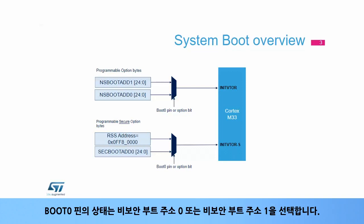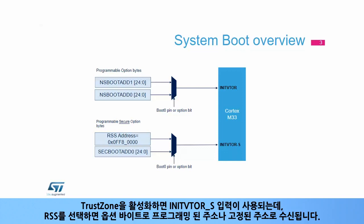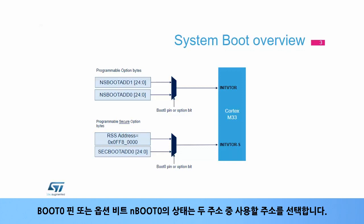The state of the BOOT0 pin selects either non-secure boot address 0 or non-secure boot address 1. When TrustZone is enabled, the INIT_VTOR_S inputs are used, which receives an address programmed in option bytes, or a fixed address when RSS is selected. The state of the BOOT0 pin or option bit N_BOOT0 selects which of the two addresses will be used.